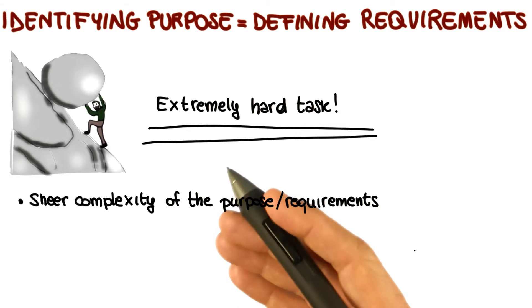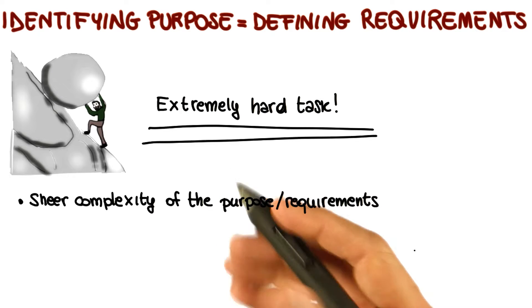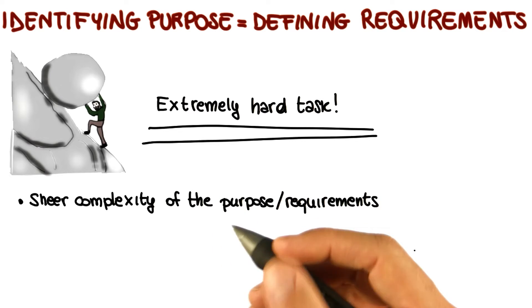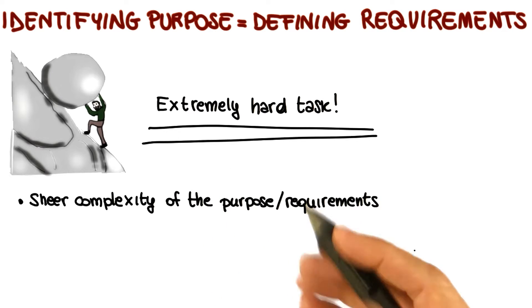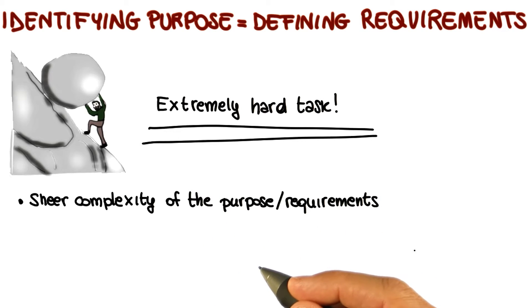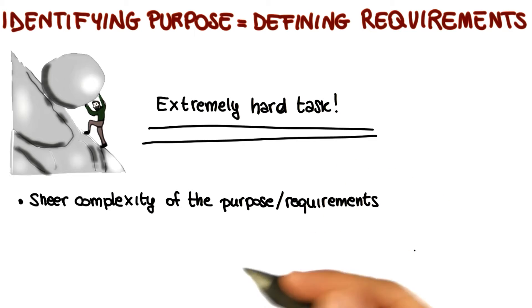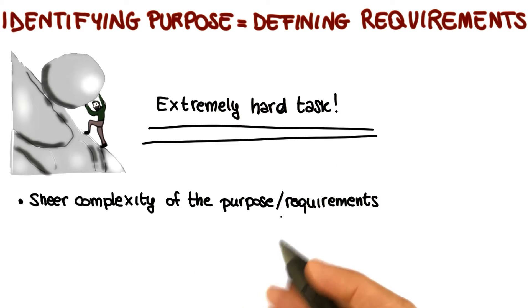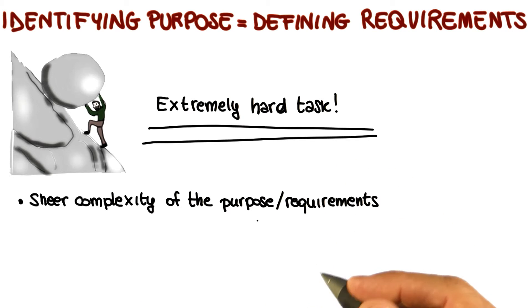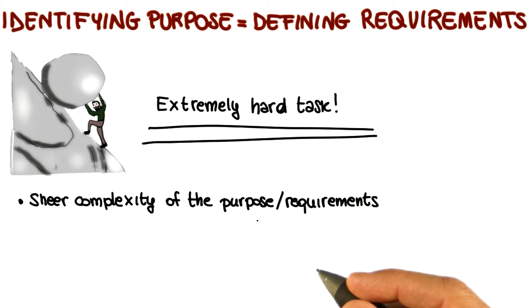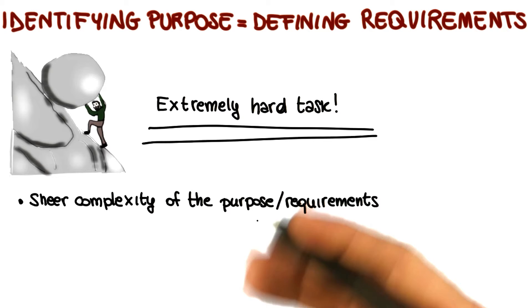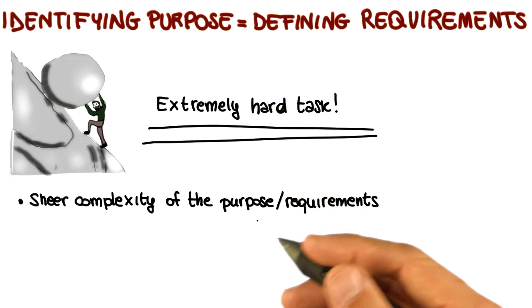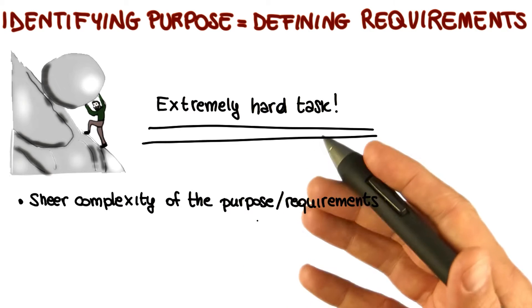Why is it so hard? First of all, the purpose of most systems is inherently extremely complex. This has to do with the sheer complexity of the purpose and the requirements. Just think of how complex is the functionality provided by most systems.